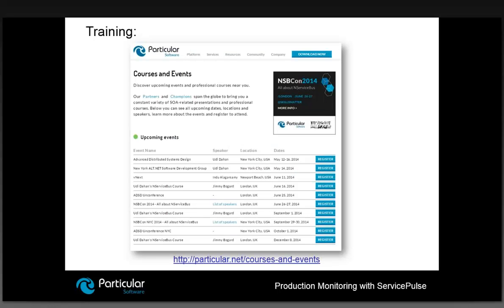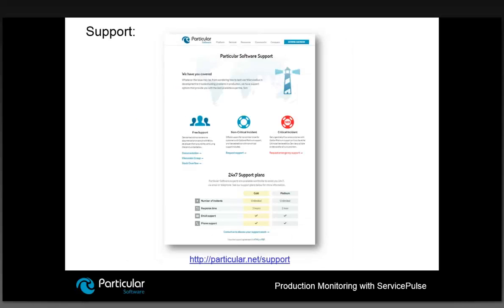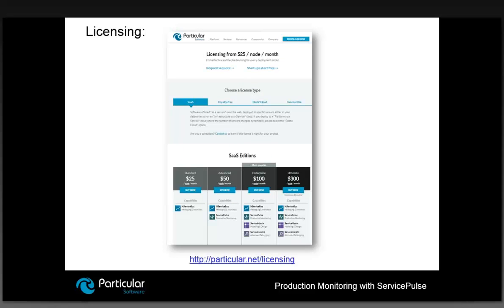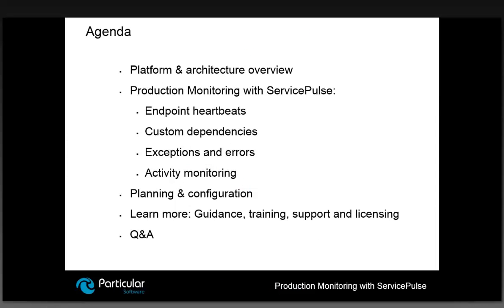These topics serve as a checklist for Service Pulse implementation and deployment. Please consider them alongside other topics in the developer portal — the links are on screen. We're continuing to invest in documentation and guidance, so please let us know if anything is missing. That more or less covers the agenda: platform architecture, heartbeats, custom checks, exceptions and errors, activity monitoring with performance counters, and planning and configuration. Let's go to the Q&A.